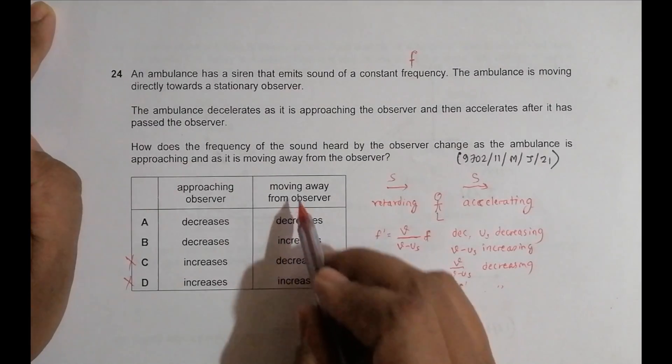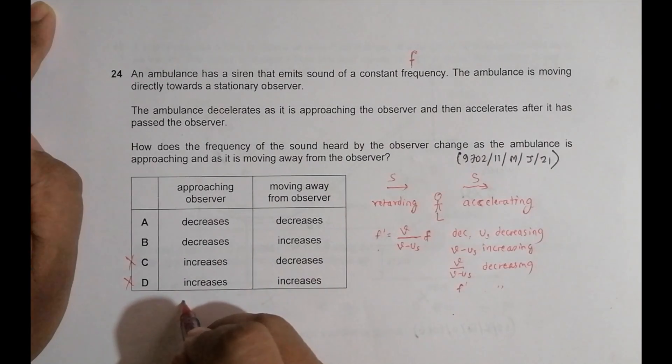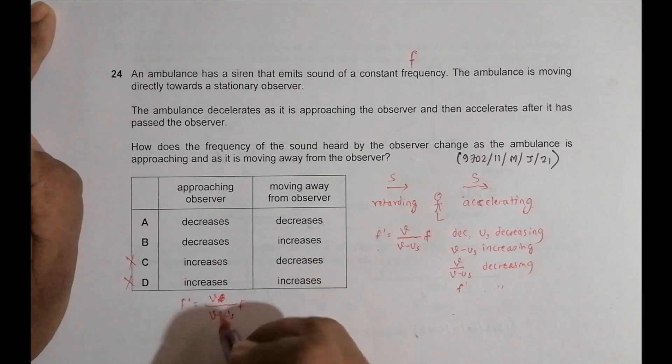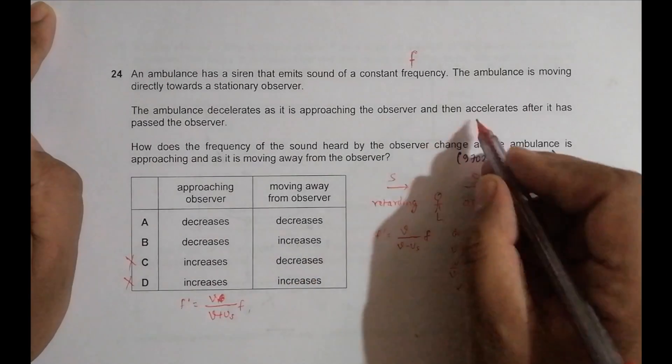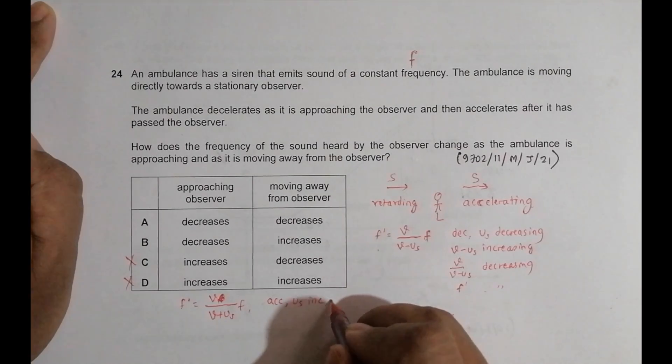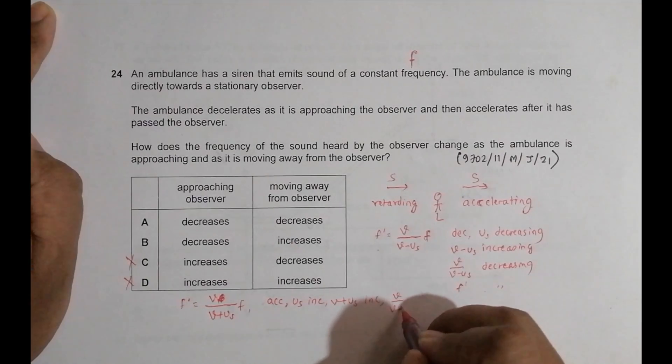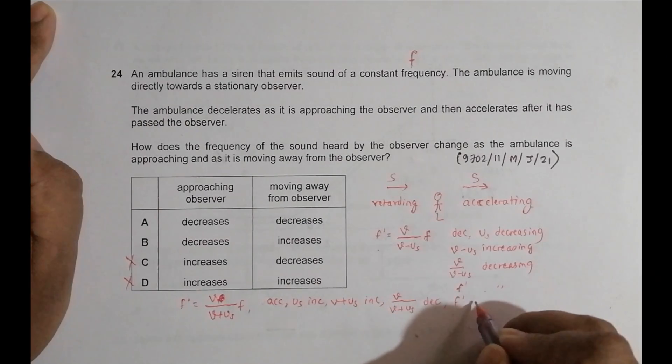Now, for this case, if it is moving away, then for moving away formula, source moving away, F prime is equal to V by V plus U S, then F. If source is moving away, so in this case, if it is accelerating, since the source is accelerating, U S increasing. U S is increasing, which means V plus U S will be increasing and it means V by V plus U S will be decreasing.